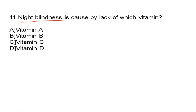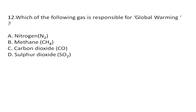Night blindness is caused by lack of Vitamin A. Which of the following gas is responsible for global warming? Carbon dioxide is mainly responsible for global warming. Global warming is caused by emission of greenhouse gases, and 72% of totally emitted greenhouse gases are carbon dioxide. A few greenhouse gases include H₂O, CO₂, O₂, and CFCs.